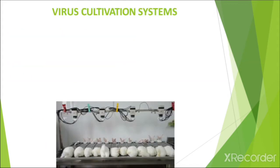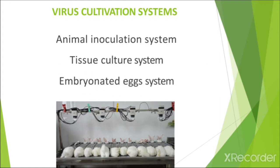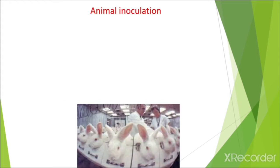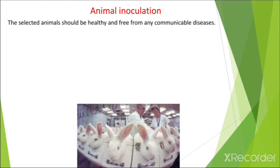There are three virus cultivation systems: first, the animal inoculation system; second, the tissue culture system; and third, the embryonated egg system. In this video lecture, we are going to understand each and every one of these, starting with the animal inoculation system.